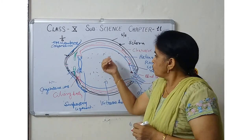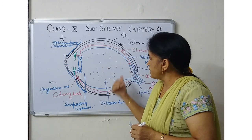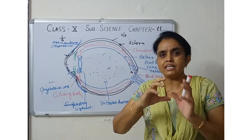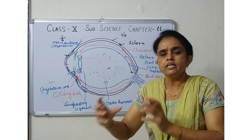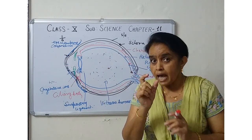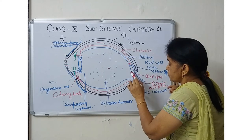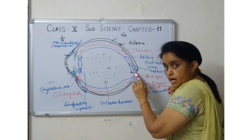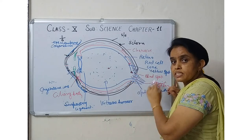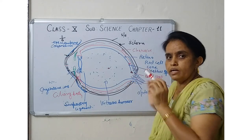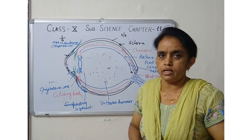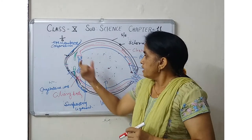In some books, certain points are referred to as the blind spot. But the actual location of the blind spot is where the optic nerves arise from the retina.